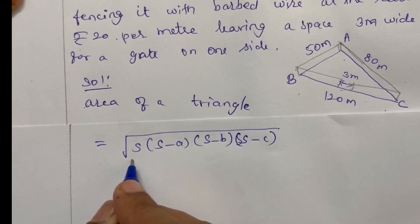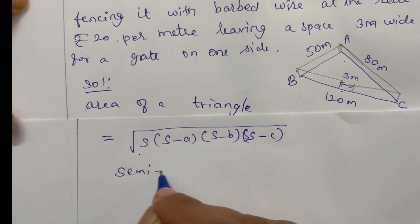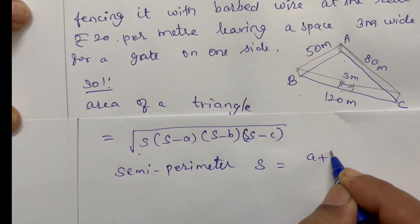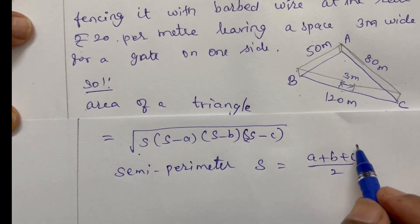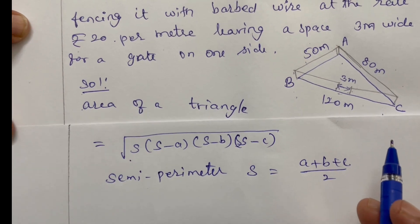S is the semi-perimeter. S is equal to A plus B plus C by 2.